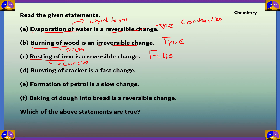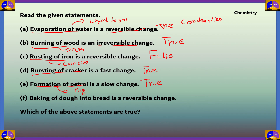Statement D says bursting of a cracker is a fast change. Bursting of a cracker happens in seconds, not years, so it is indeed a fast change — statement D is true. Statement E says formation of petrol is a slow change. Formation of petrol takes many years, so it is a slow change — statement E is also true.